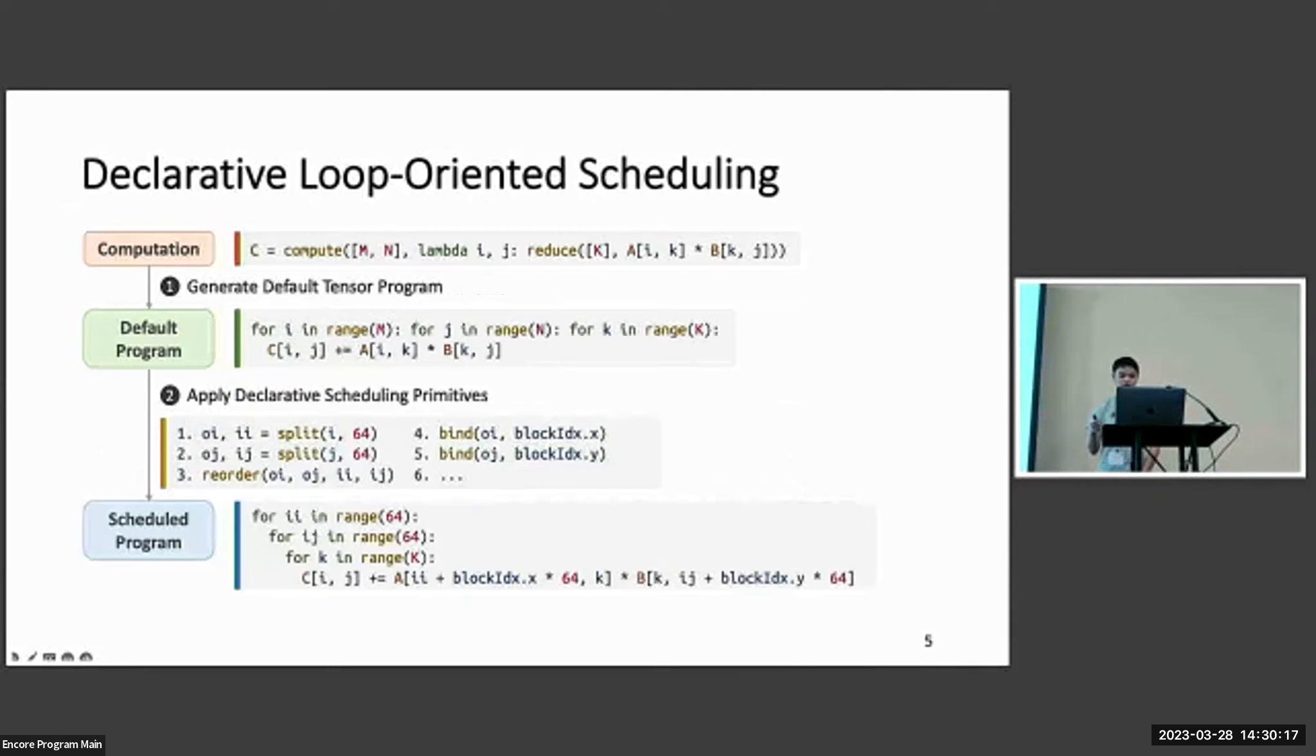After applying these declarative schedule primitives, we can get a more efficient scheduled tensor program, and it will be compiled into the target code. We call this kind of scheduling declarative loop-oriented scheduling, because it uses declarative schedule primitives to transform the loop structure of the tensor program. There are different hyperparameters used in the schedule primitives, and the choice is different for different hardware and different input sizes. So we need to find the best one, and this process is called kernel tuning.